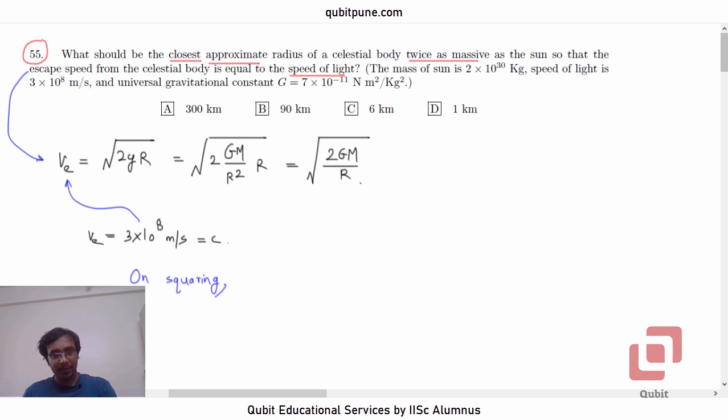On squaring this, we shall get 9×10^16 equals 2 times g. G is in this case a universal constant, capital G, 7×10^-11.